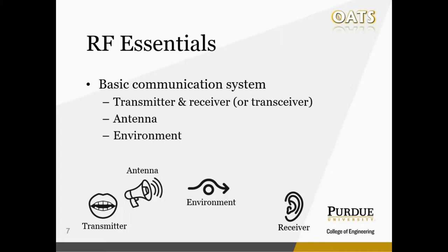The other really big part of a communication system is the environment that the transmitter and receiver are sitting in. For a city, you have a lot of obstacles — cars, different architecture, and people generating different amounts of noise. In the rural area, things are a lot more open. However, you still need to consider aspects like topography and vegetation, depending on what type of crops you are growing.